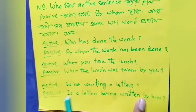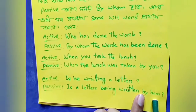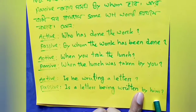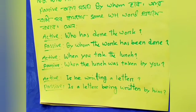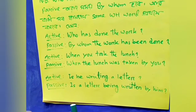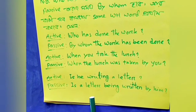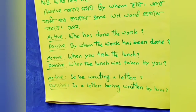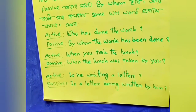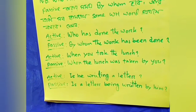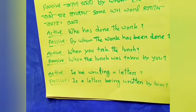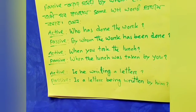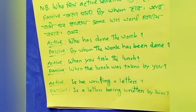For interrogative passive, the subject becomes objective form — for example, 'he' becomes 'him.' So 'Is he writing a letter?' becomes 'Is a letter being written by him?'